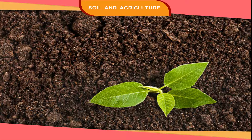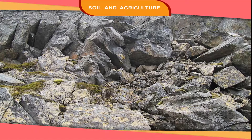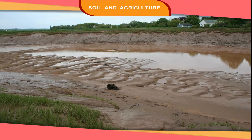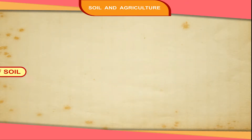Soil is a natural resource. Soil is the chief natural and important resource for agriculture. It is formed by breaking up of rocks. It is carried to different places by rivers and winds. The nature and types of soils vary from place to place.